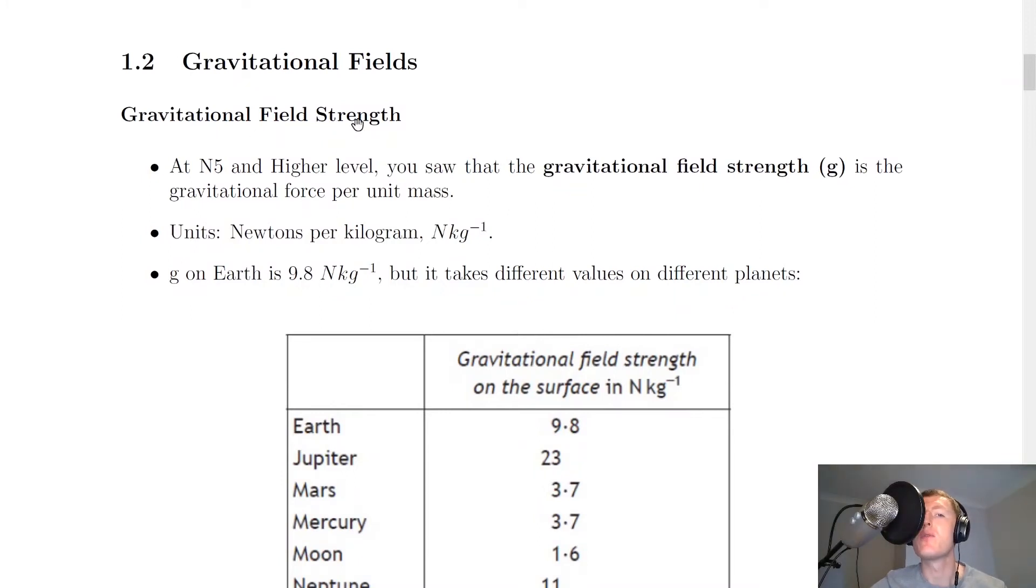To begin with, we're going to look at gravitational field strength, and this is revision from National 5 and Higher Level. You saw that the gravitational field strength, given the symbol small g, is the gravitational force per unit mass, or the weight per unit mass, and that was its definition.